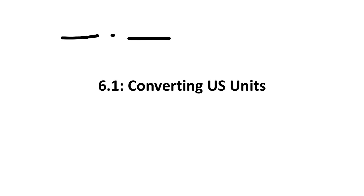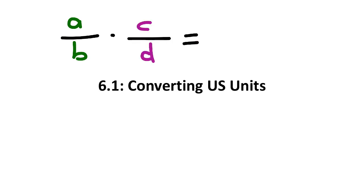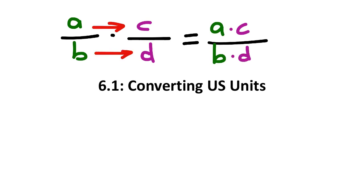So if we look back at fraction multiplication — if I take two fractions and multiply them, using letters since this is abstract: a over b times c over d ends up being one fraction where you take a times c in the numerator and b times d in the denominator. We're just multiplying straight across. You could write it as a single fraction: a times c over b times d. That's a good review of fraction multiplication.